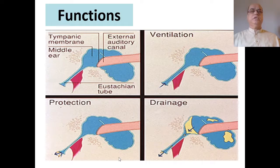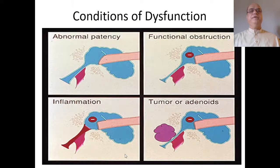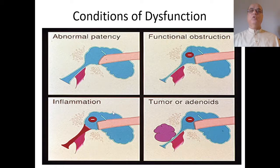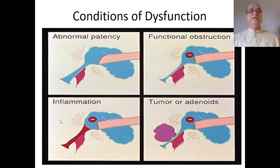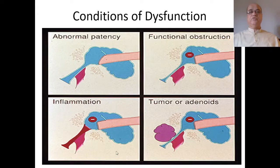The main important functions we discussed last time: one is ventilation, the other is drainage, the third is protection. There can be problems with these functions due to abnormal patency, functional obstruction, external compression by tumors or adenoids, or inflammation of the lining mucosa and submucosa, leading to Eustachian tube dysfunction.